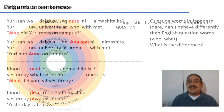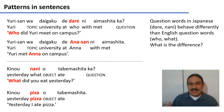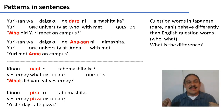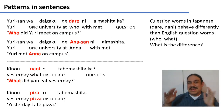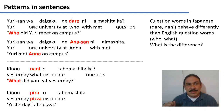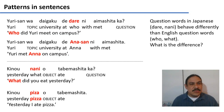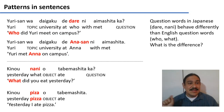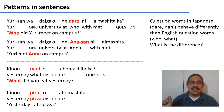Let's look at an example from syntax, where you'll have to solve a little syntactic mystery. These are examples of Japanese sentences, and there's a difference between Japanese and English that you'll have to figure out. Here is the first sentence — let's go through it in detail. 'Yuri-wa daigakude dare ni aimashitaka?' The first line is the Japanese sentence, and the second line is the gloss.